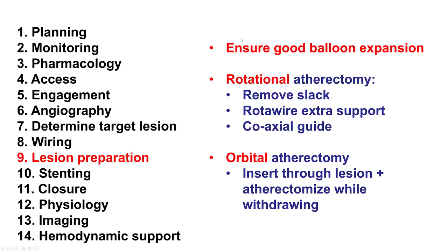Lesion preparation is very important in osteal lesions because many of them can be resistant, so excellent balloon expansion should be ascertained. Sometimes atherectomy is needed for heavily calcified lesions. For osteal lesions, it's best to use the rotawire extra support for rotablator to minimize movement and have a coaxial guide position to minimize angulation. If there are kinks or angulations on the wire, that can potentially lead to injury of the coronary artery or even fracture of the rotawire.